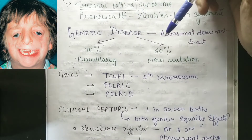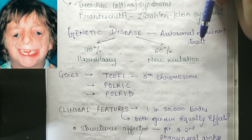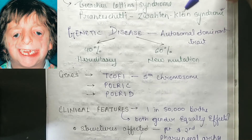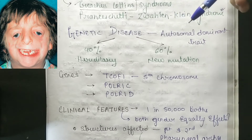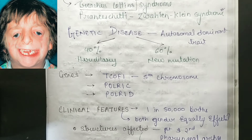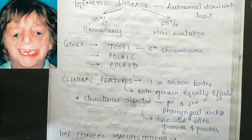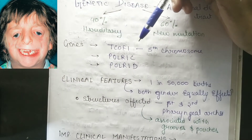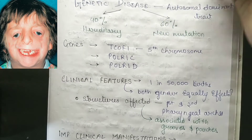This condition is 40% hereditary but 60% is new mutation. So at the time of pregnancy, there is a new mutation for children. The genes involved include TCOF1, located on chromosome 5.